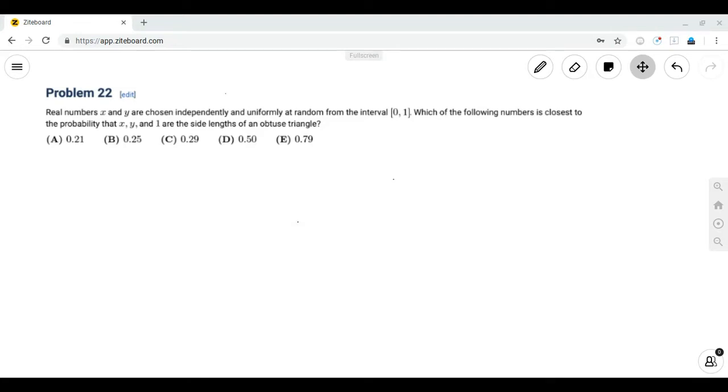The problem reads, real numbers x and y are chosen independently and uniformly at random from the interval 0,1. Which of the following numbers is closest to the probability that x, y, and 1 are the sidelines of an obtuse triangle?